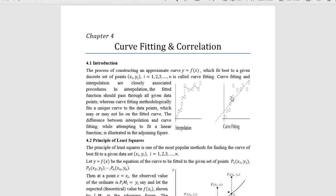This is the actual data point and this is the required curve. Since there is a possibility of error, those errors should be reduced with the help of the principle of least squares. In interpolation, the fitted function should pass through all the given data points, whereas in curve fitting the curve satisfies most of the data points — which may or may not lie on the fitted curve. This difference is illustrated in the adjoining figure.